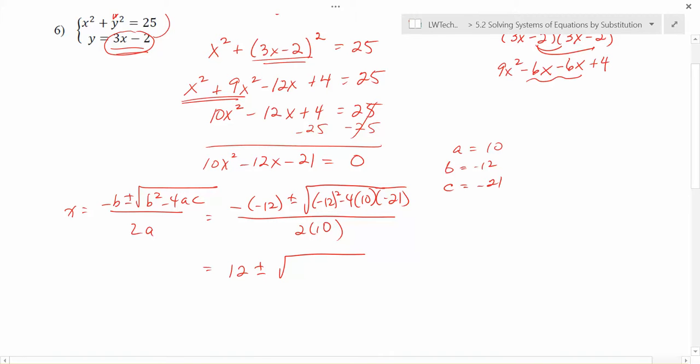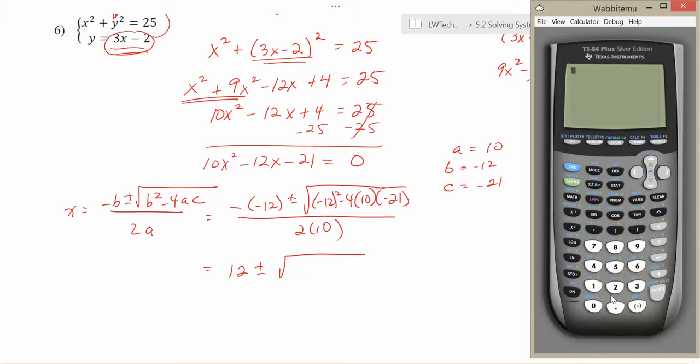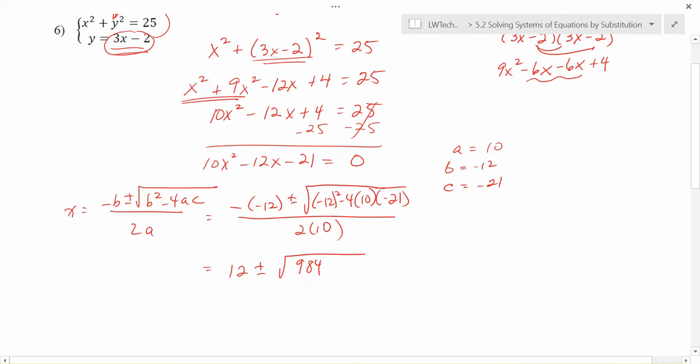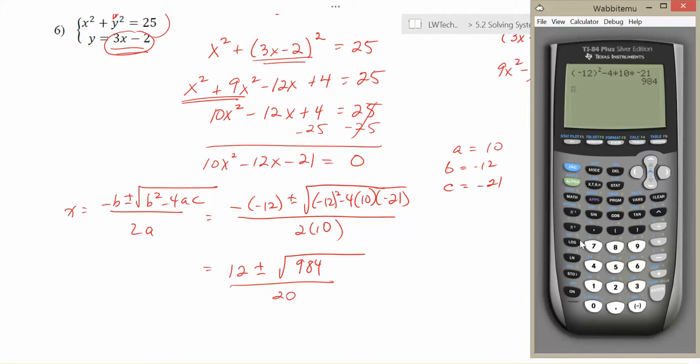The minus negative 12 there will become a positive 12. Let's see what we can find inside of that radical symbol there. Let's pull up the calculator. So here we'll want to do negative 12 in parentheses squared minus 4 times 10 times negative 21, which gives us 984. And that's all going to be divided by 20. Now we can check real quick to see if 984 is a perfect square.